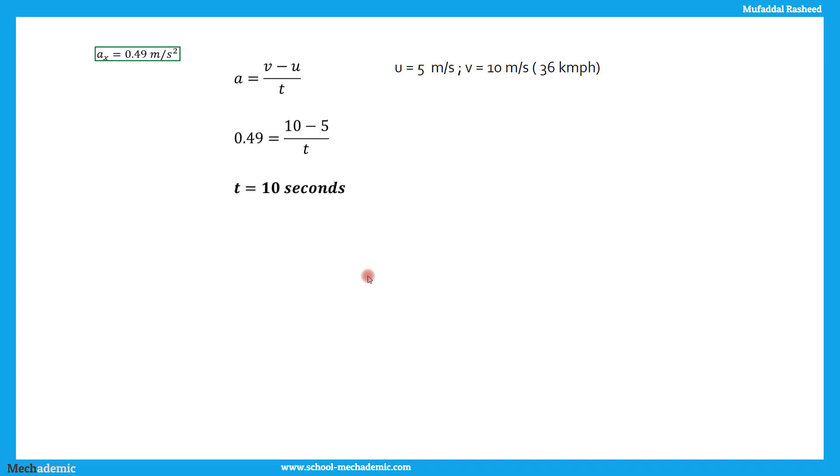Now if you want to calculate the time taken, we know the acceleration of the vehicle and we know the initial velocity which is U which is 5 meter per second, 18 kmph. And we know the required final velocity is 36 kmph. So we can calculate the acceleration required to move from 5 meter per second to 10 meter per second. And for moving from 5 to 10, how much time will it take is T. So we can find that using this equation. A is equal to V minus U divided by T, where V is the final velocity 10, U is the initial velocity and T is the time taken. So 0.49 is equal to 10 minus 5 divided by T. T is 10 seconds.